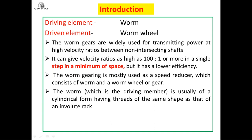Spur gear has more efficiency than helical, helical more than bevel, and bevel more than worm. The maximum efficiency achievable in a worm and worm gear drive is about 94 to 95 percent. An important point: worm is always the driving member.